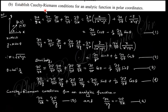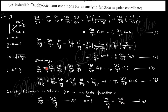Next, establish the Cauchy-Riemann condition for an analytic function in polar coordinates. The Cauchy-Riemann conditions for an analytic function are: ∂u/∂x = ∂v/∂y and ∂u/∂y = −∂v/∂x, in the Cartesian coordinate system (x, y).